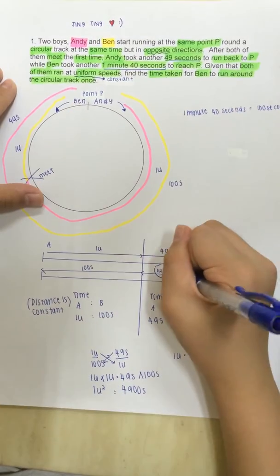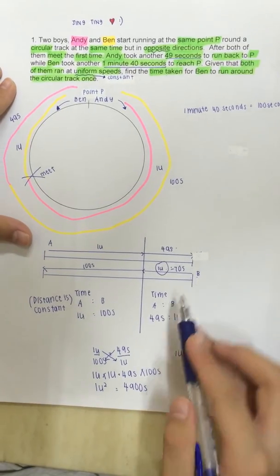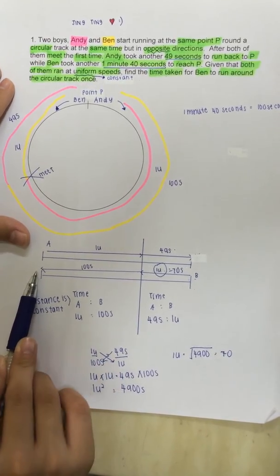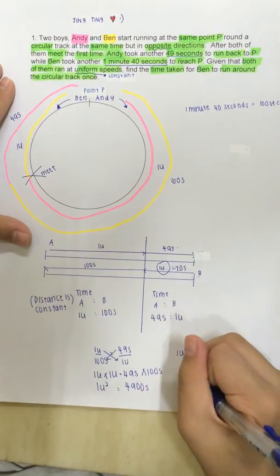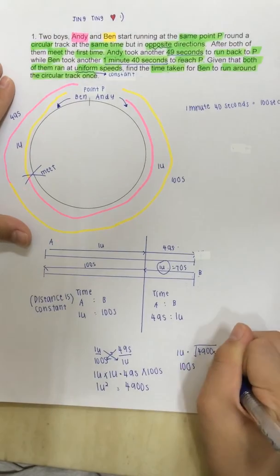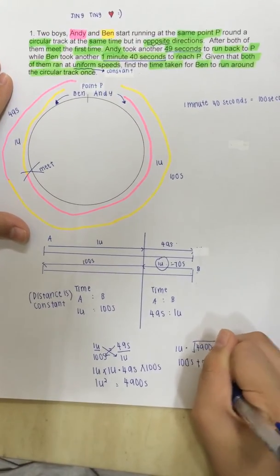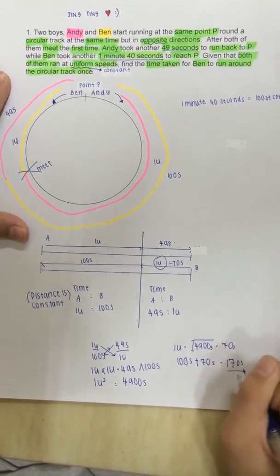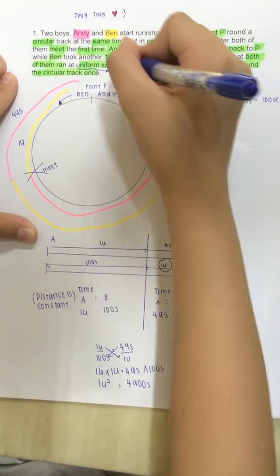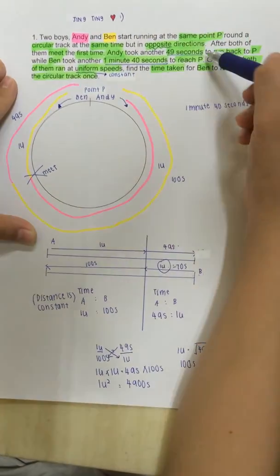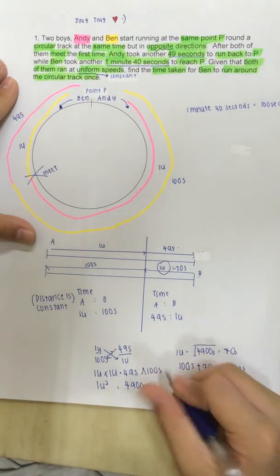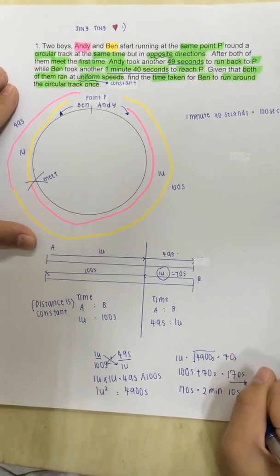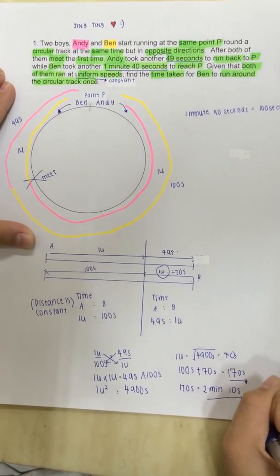So, this is 70. They want Ben to run the circular track once with this straight line and back to where he started. So, the answer is already here, which is 100 seconds plus 70 seconds is 170 seconds. And that's the answer. But you may want to convert it back to minute and seconds. As if there is less than 60 seconds, it will be converted. And so, 170 seconds is actually equal to 2 minutes and 10 seconds, which is also the answer. Thank you.